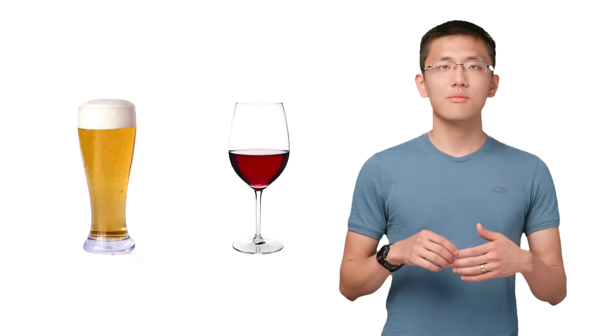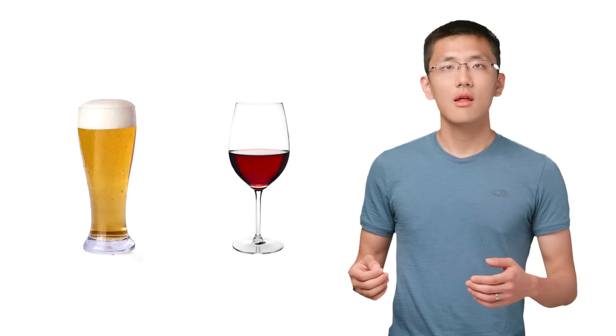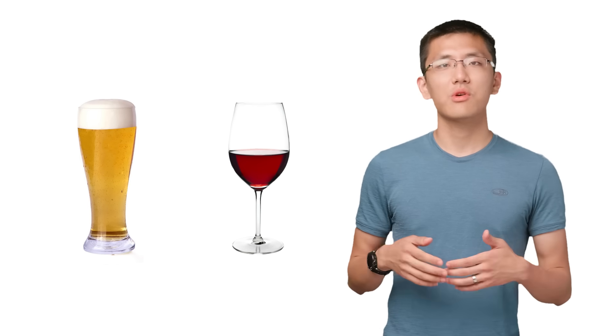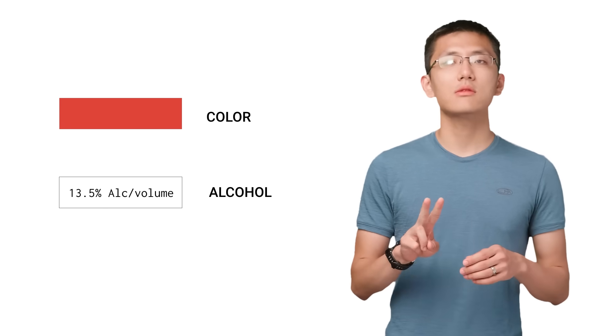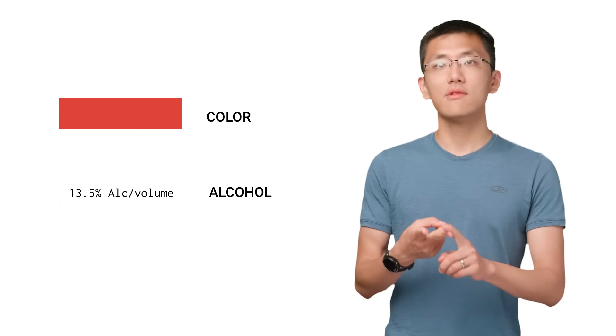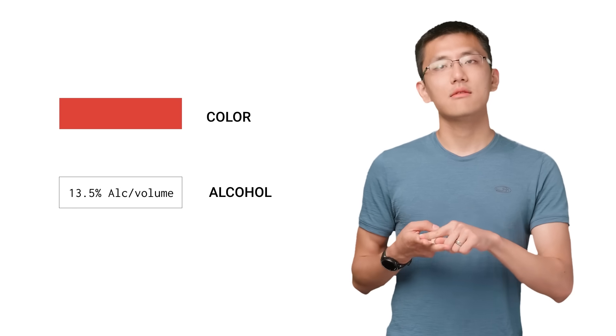Our data will be collected from glasses of wine and beer. There are many aspects of drinks that we could collect data on, everything from the amount of foam to the shape of the glass. But for our purposes, we'll just pick two simple ones: the color as a wavelength of light, and the alcohol content as a percentage.